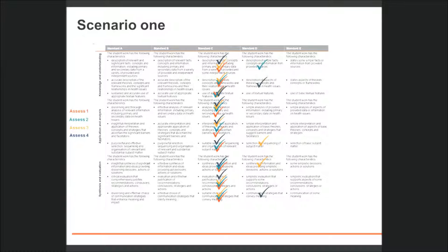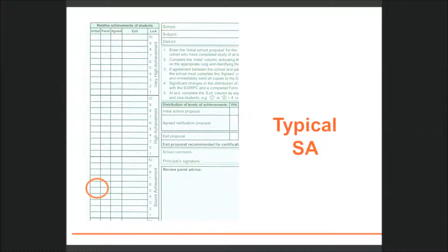For each of the three dimensions, the evidence matches on-balance with C standard descriptors, but on occasion the evidence matches D standard descriptors. The school might choose to award on-balance C, C, C. The folio meets the syllabus requirements for sound achievement, and an appropriate decision might be to place the folio at typical, or around the middle of sound achievement. There may be a number of students with similar achievement. The school will make rung placement decisions for each student by looking at the extent to which the syllabus exit standards have been demonstrated for each dimension. In this example, the placement will be determined by considering the evidence of D qualities in the folio.